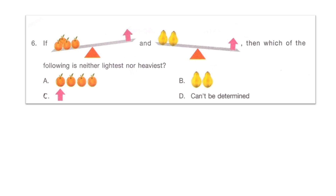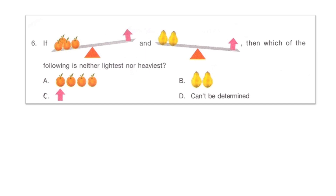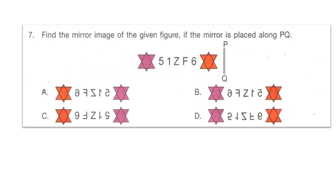Next question: if four oranges is heavier than the upward arrow, and two pears is lighter than the upward arrow, then which of the following is neither the lightest nor the heaviest? Is it option A: the four oranges, B: the two pears, C: the upward arrow, or D: can't be determined? The upward arrow is not the heaviest in image one, and not the lightest in image two, so we can conclude that option C — the upward arrow — is neither the lightest nor the heaviest.